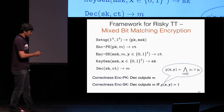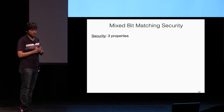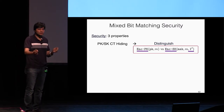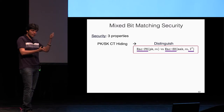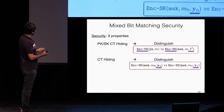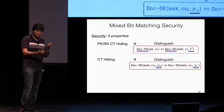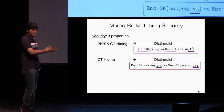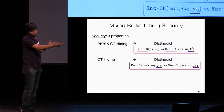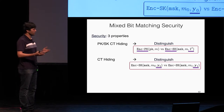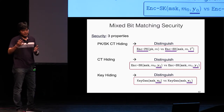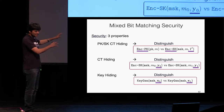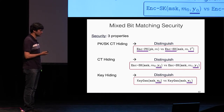There are three security properties for MBME. The first says you should not be able to distinguish between the two modes of encryption — public key versus secret key ciphertext — if you don't have some distinguishing keys. The second is a ciphertext hiding property: you should not be able to distinguish between two secret key ciphertexts if you don't get any distinguishing keys. There will exist distinguishing keys that can decrypt one ciphertext and not the other, so you should not get those secret keys. The third is a key hiding property: you should not be able to distinguish between two secret keys for two different attribute vectors x0 and x1, if you're not given some distinguishing ciphertext.